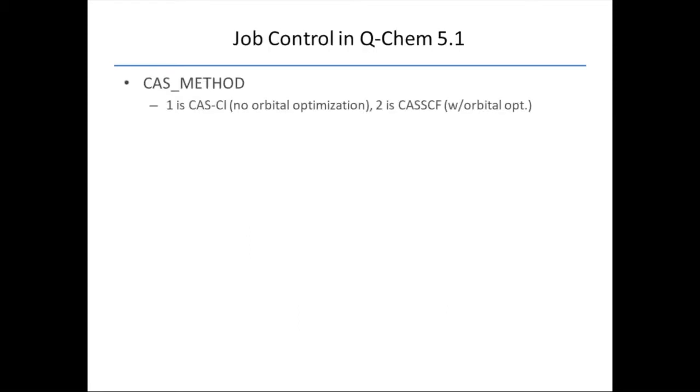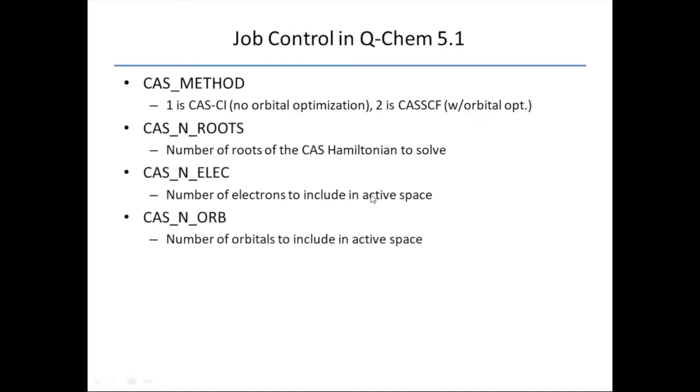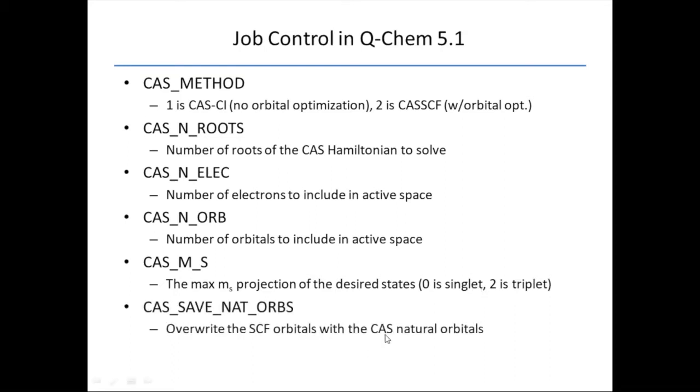Here's an example of the job control. You turn on all the CAS methods in Q-Chem with this CAS_METHOD rem. If you say 1, it's CAS CI, which is no orbital optimization. If you set it to 2, it's CASSCF, which does have orbital optimization. You can specify the number of roots you want to solve for. You have to specify the number of electrons in your active space and your number of orbitals. You have to specify the max m_s projection of your desired state. So 0 is a singlet, 1 is a doublet, 2 is a triplet, and so on. And this is about saving natural orbitals.